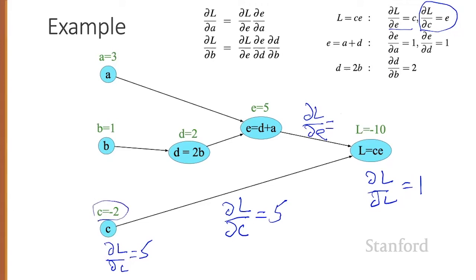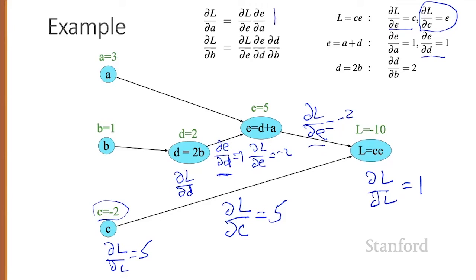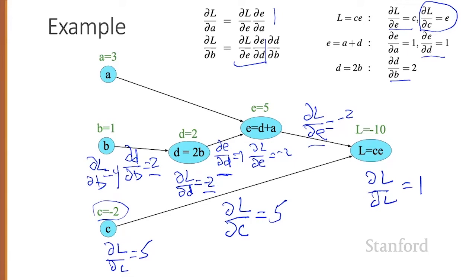We can also go left to the partial of L with respect to E, which is C, known to be minus two. The partial of E with respect to D is one. So the partial of L with respect to D is obtained by multiplying the partial of L with respect to E and E with respect to D, giving minus two. Going one step further, the partial of D with respect to B is two, so the partial of L with respect to B is minus two times two, which equals minus four. We can do similar things for the rest of the graph.